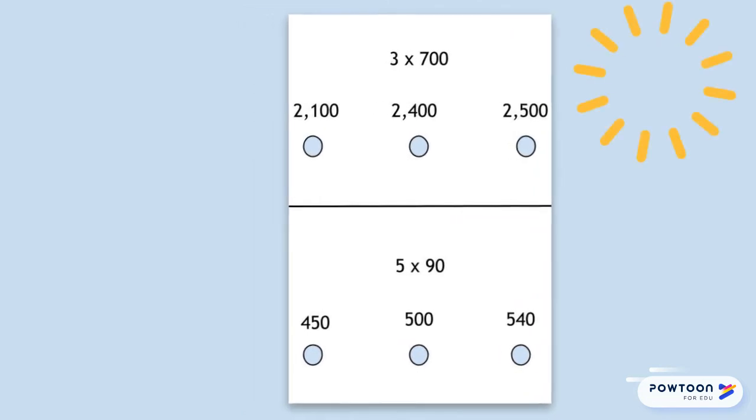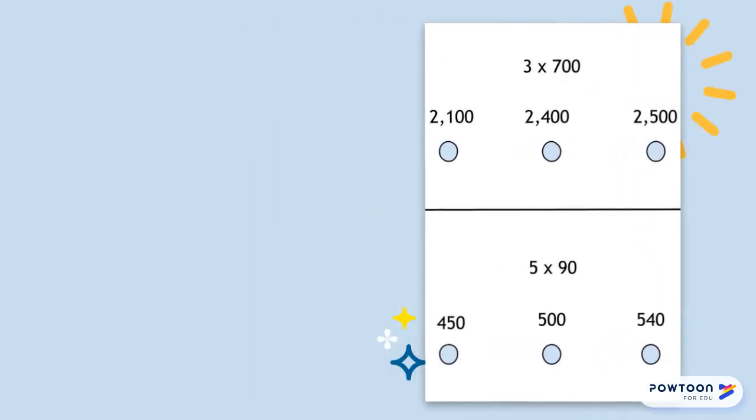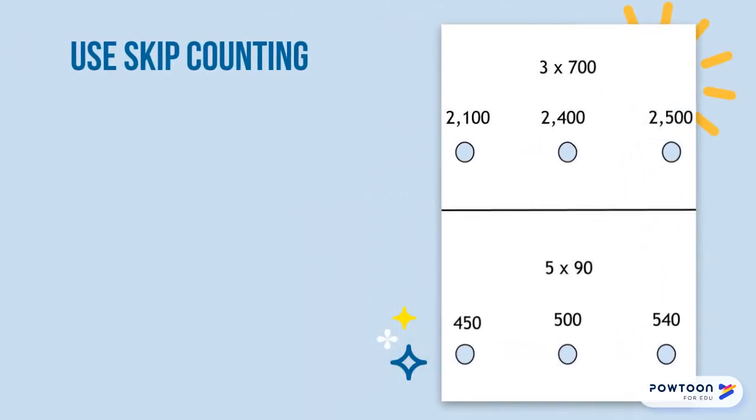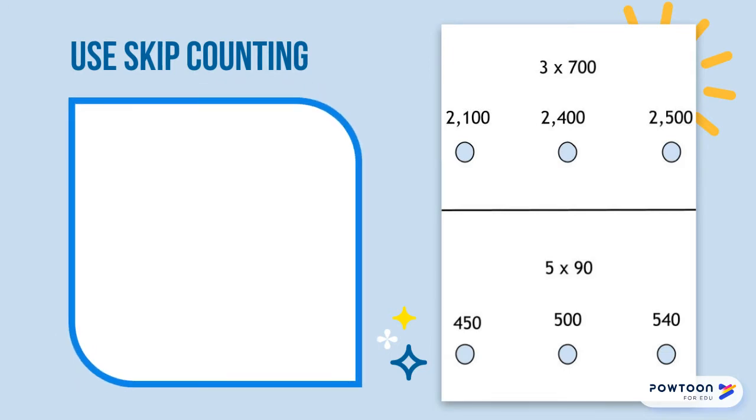Since this is a multiplication problem, it's easy to skip count. That's what we do when we multiply. But we're not going to multiply 3 times 700. That would be way too long.